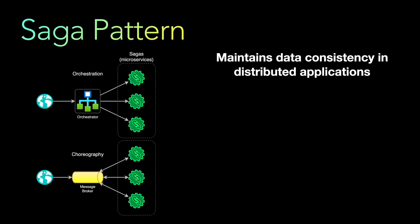There are two ways of implementing the saga pattern: orchestration and choreography. In orchestration, there is an orchestrator — a system whose responsibility is to tell each microservice what to do and in what sequence, ensuring data consistency across all microservices.